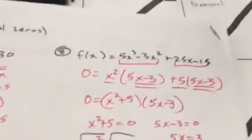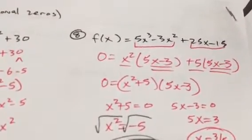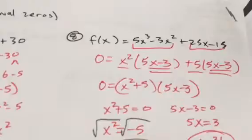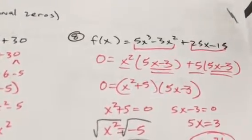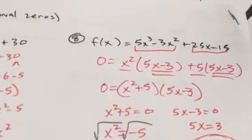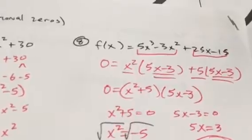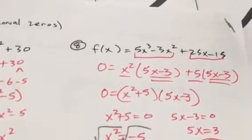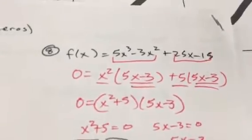Number 8 uses factoring by grouping. Notice you have four terms, so group the first two and the second two. What can I factor from 5x³ and -3x²? I can factor out x². Taking x² from both leaves 5x - 3. Always bring down the same sign, so plus.